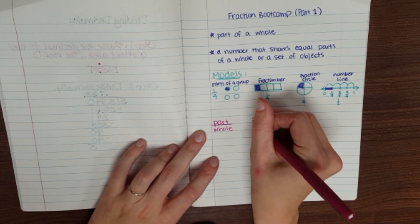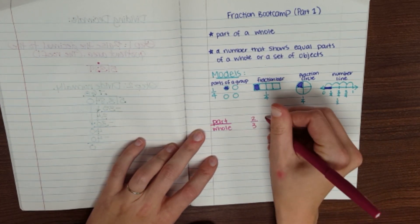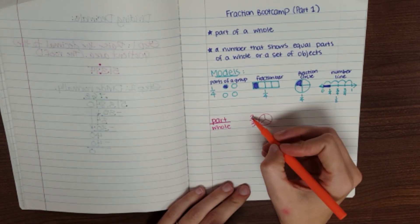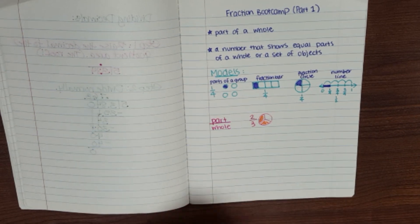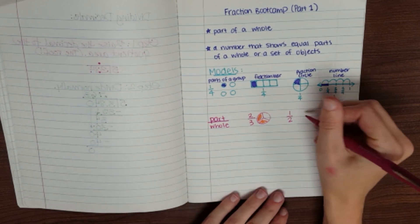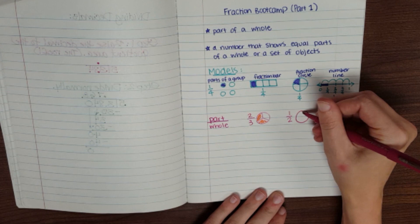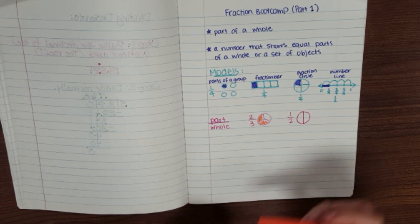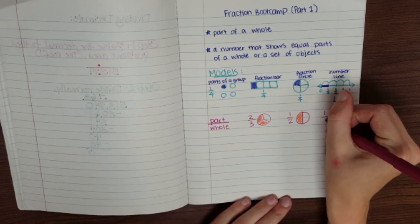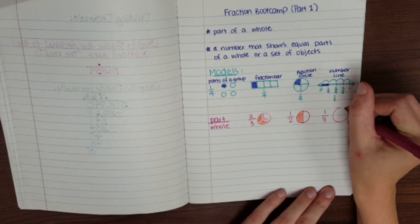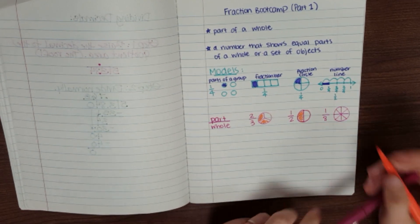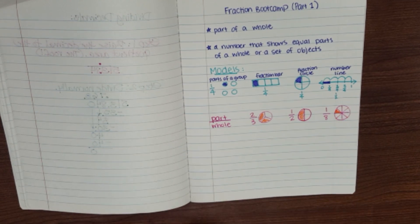Other examples of this might be two-thirds. That would be something cut into three pieces. And two of those pieces would be shaded. Or you might see a fraction like one-half. That would be something cut into two pieces. And we're only talking about one of those pieces. And one last example, maybe one-eighth. That would be a whole cut into eight parts. And only one of those pieces would be shaded.